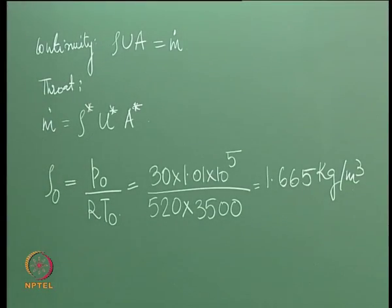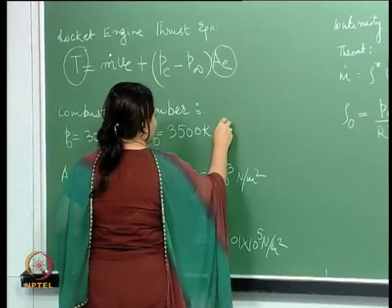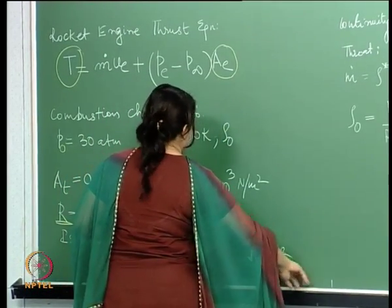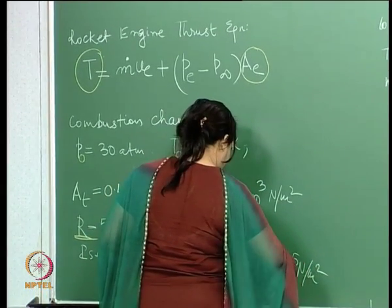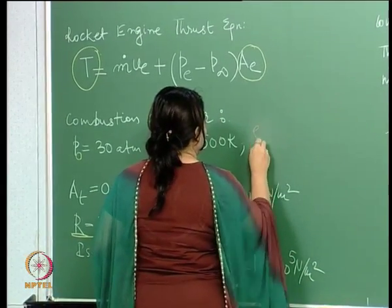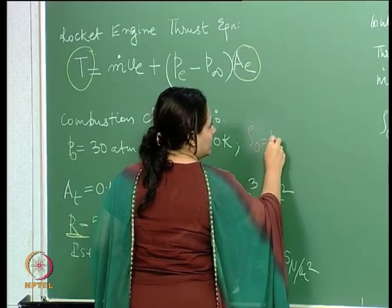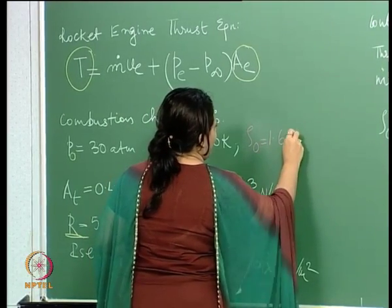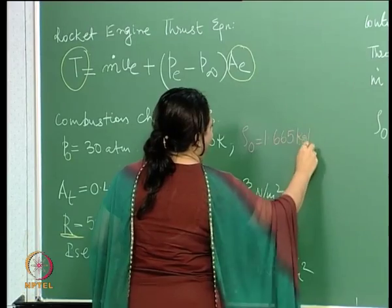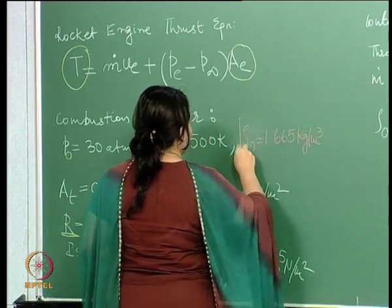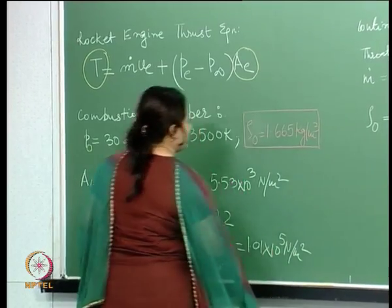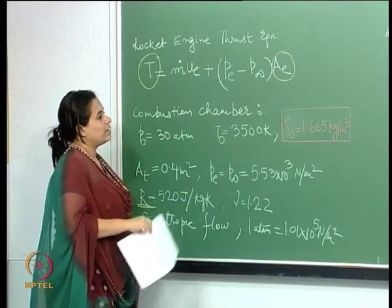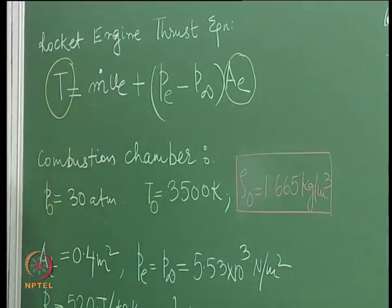So we get the density of the gas mixture in the combustion chamber. We were given just pressure and temperature, and we have now calculated the density — these are the reservoir conditions in the combustion chamber, which comes out to be 1.65 kg/m³. Since we have calculated this value, let me write that here.